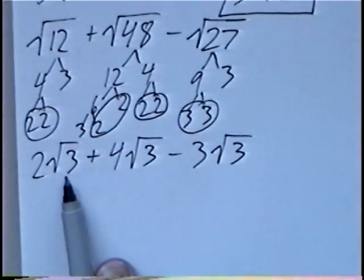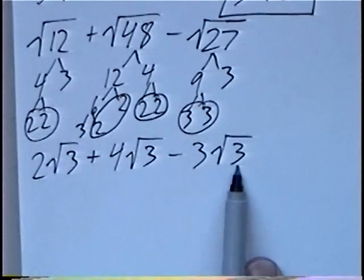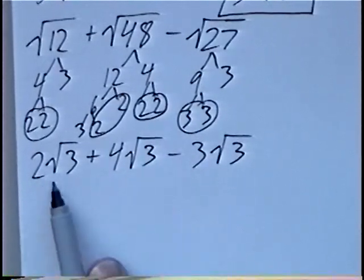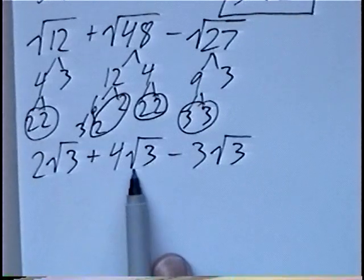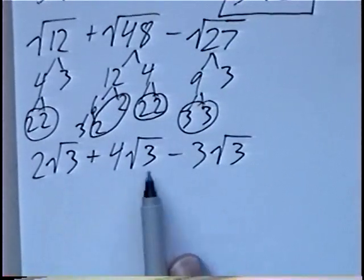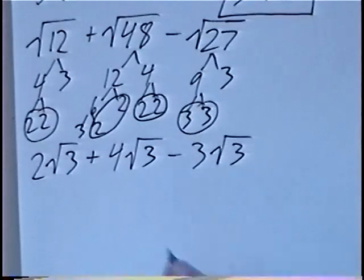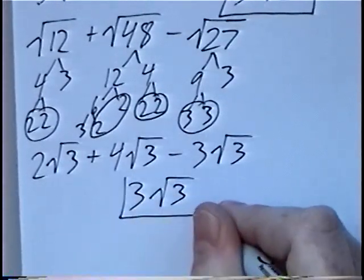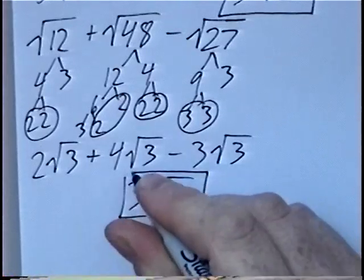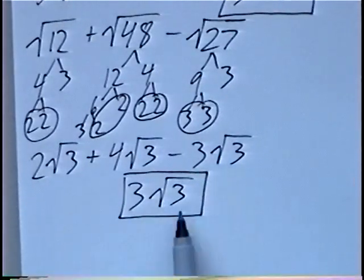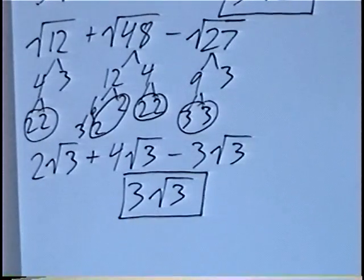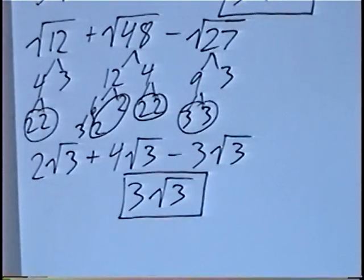After simplifying, all three radicals are the same number — radical 3 — which means we can combine all three together. 2 radical 3 plus 4 radical 3 is 6 radical 3, minus 3 radical 3 gives 3 radical 3. Similar to variables, the radical 3 stays the same, and combining 2 plus 4 minus 3 gives a final answer of 3 radical 3.